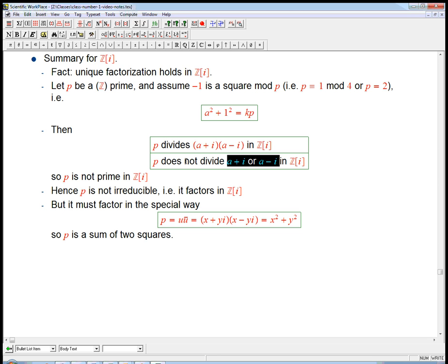Namely, p is not prime by definition in the Gaussian integers. And here's where we use the unique factorization. That means that p is also not irreducible, so it must factor.